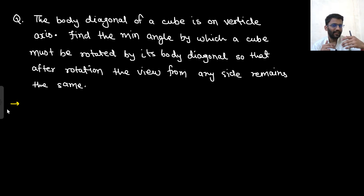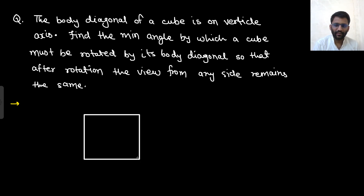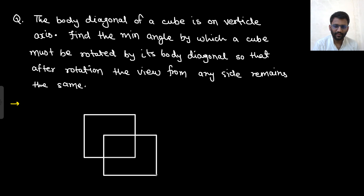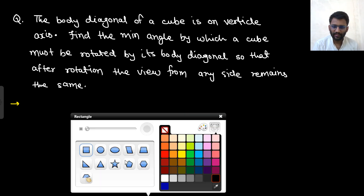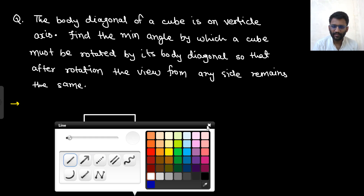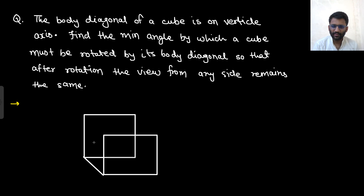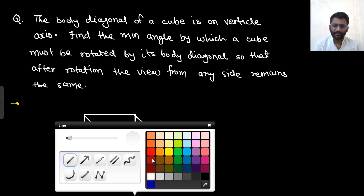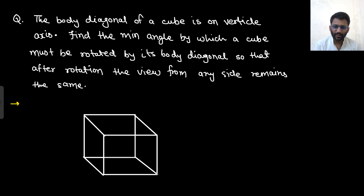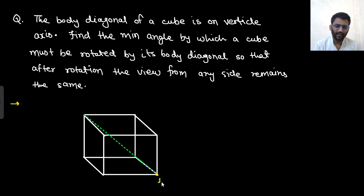Body diagonals — you can think of your room to understand. I will make a diagram. This is your cube. This is a body diagonal — if I call this point as 1 and this as 8, then 1 to 8 is the body diagonal.